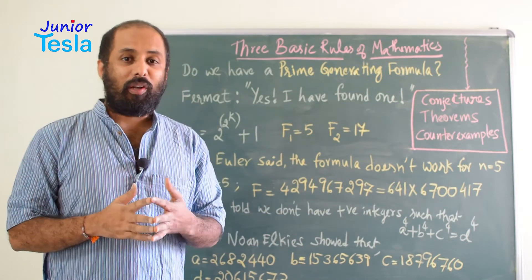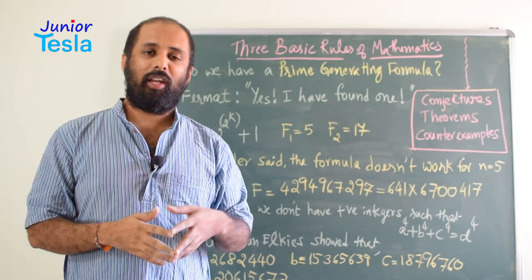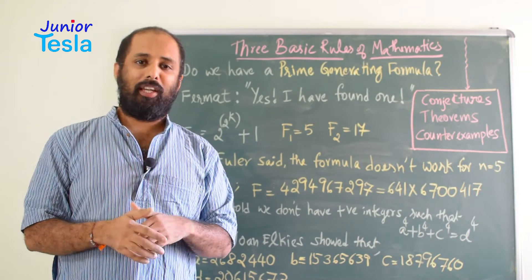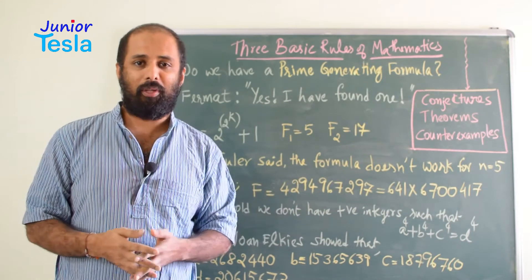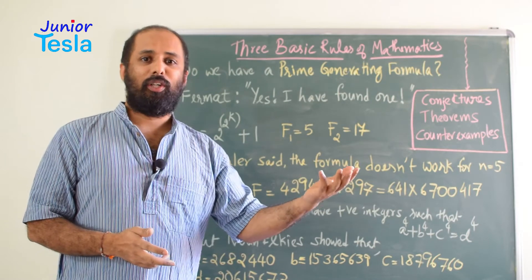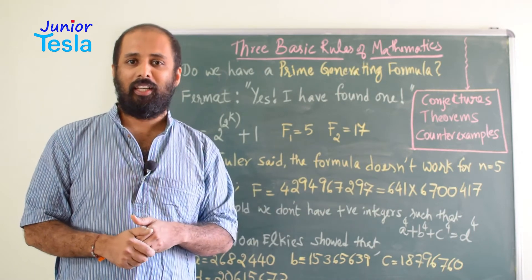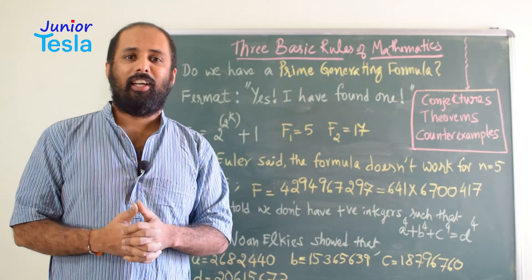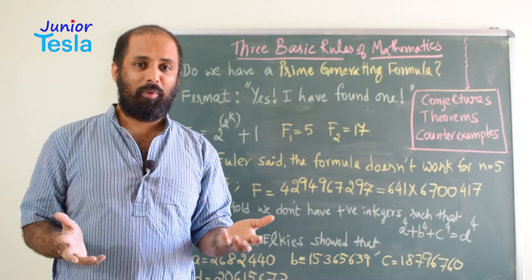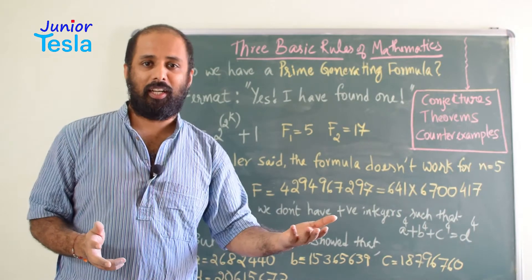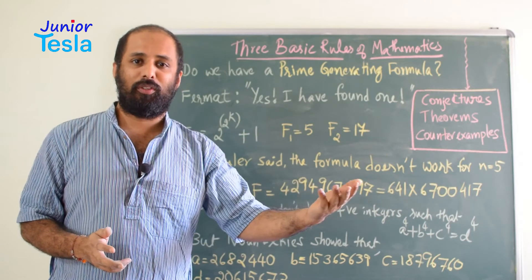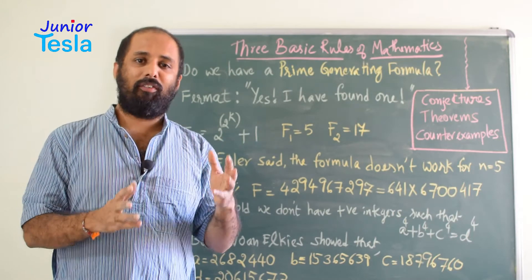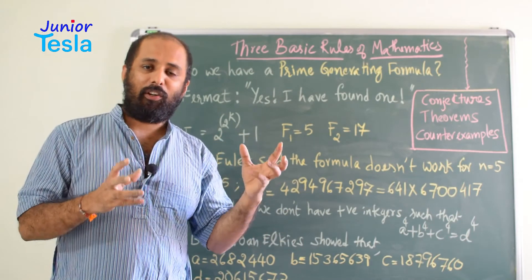Now, if you want to generate only odd numbers, odd natural numbers, you can have a formula. So, odd number is equal to 2n plus 1. If you put n equal to 1, 2, 3, etc., you always end up with an odd number. Similarly, if you want to generate only even numbers, you can have a formula: even number is equal to 2n. Can you have a formula which will generate only prime numbers?